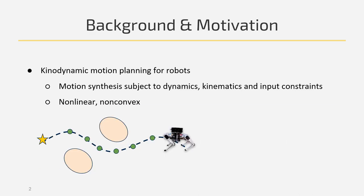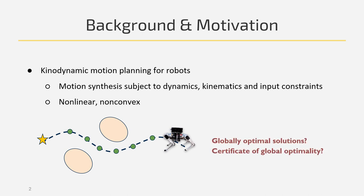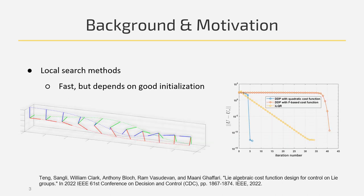Kinodynamic motion planning is fundamental in robotics research. These problems are usually non-convex due to complicated constraints. One natural question is: how can we obtain a globally optimal solution or a certificate of global optimality? Local search-based methods using gradients are very fast, but the solution quality really depends on how good the initialization is.